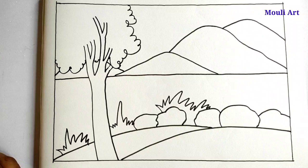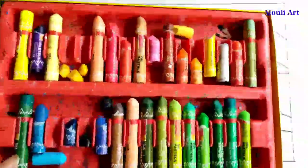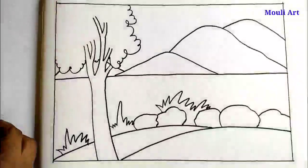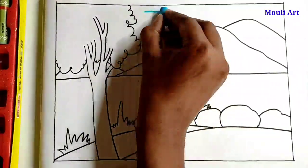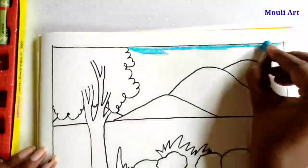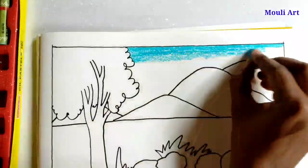So the outline is complete. Now I am using Camel oil pastel for this drawing. Now take a sky blue color and start from sky, coloring like dark to light.